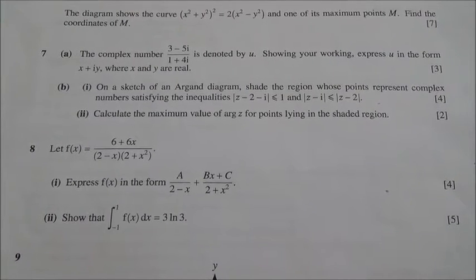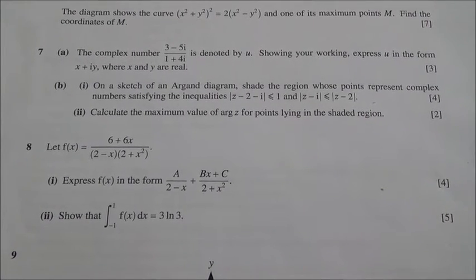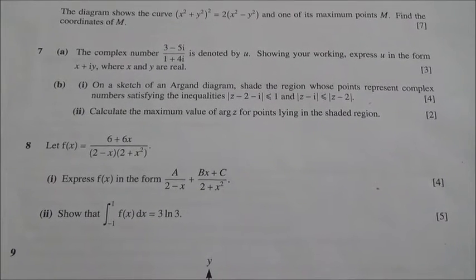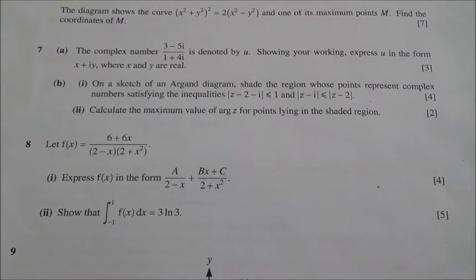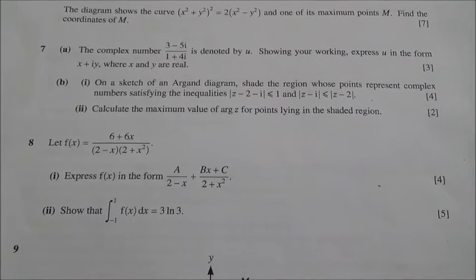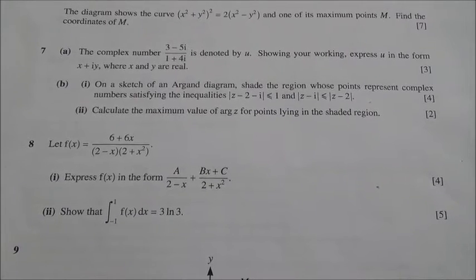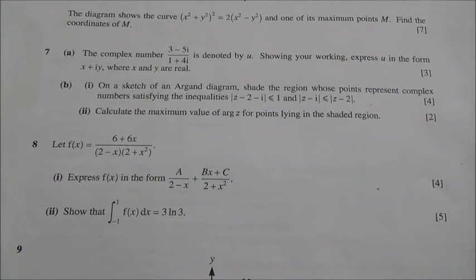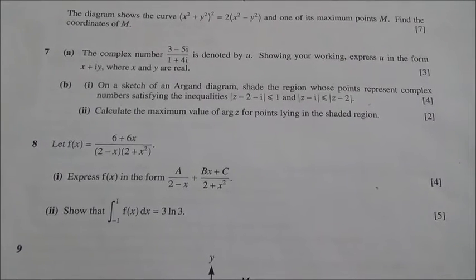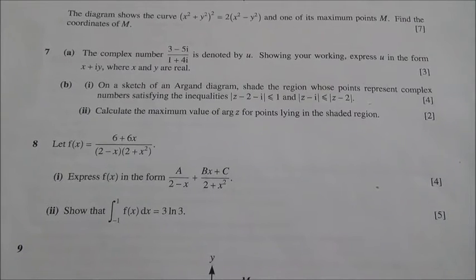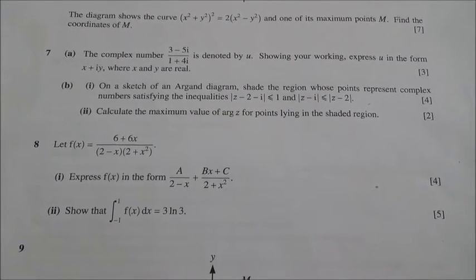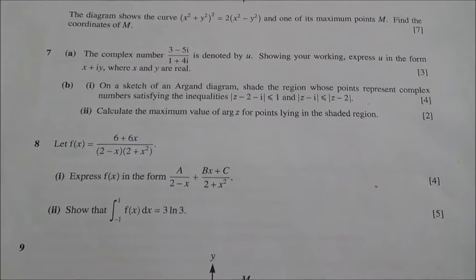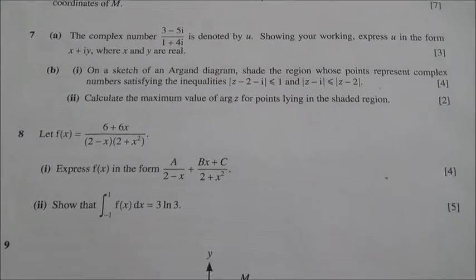Question number 8, taken from June 2014, Advanced Level Maths HSC P3. Let f(x) equal 6 plus 6x over bracket 2 minus x times bracket 2 plus x to the square. Express f(x) in the form a over 2 minus x plus bx plus c over 2 plus x squared. Hence, we have to show that the integral of f(x) dx with limits from minus 1 to 1 is equal to 3 ln 3. So, this is partial fractions.